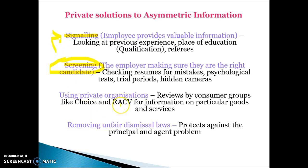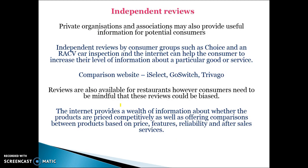You can use private organisations — reviews by consumer groups like Choice and RACV tell you more about products. Removing unfair dismissal laws also tries to prevent the principal-agent problem because if you hire someone that's not up to standard, you can get rid of them quickly. Independent reviews from private organisations provide useful information for consumers. Comparison websites like iSelect, GoSwitch, and Trivago allow you to compare prices and quality, making the best choice and reducing the likelihood of adverse selection.